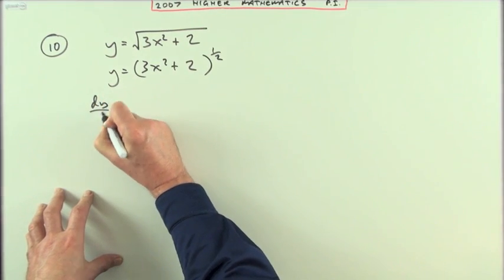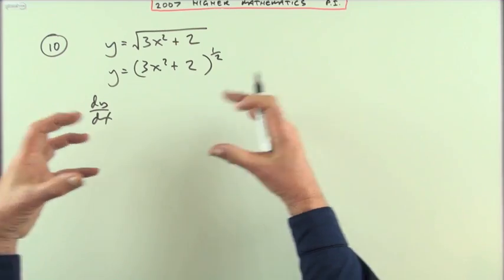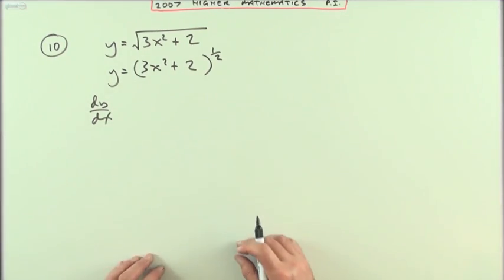And you have to find the derivative. So the derivative's going to be working your way in, like going through the layers of an onion, but there's only the two layers here.